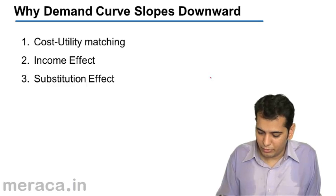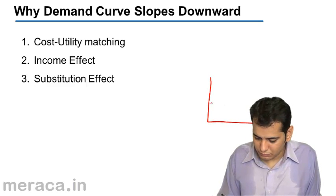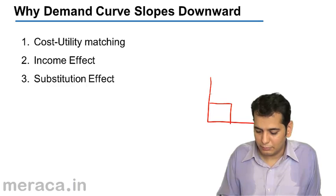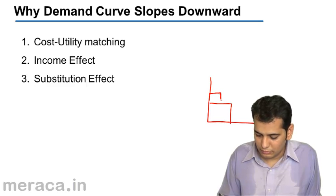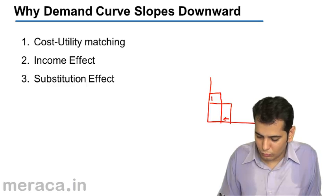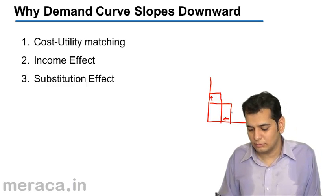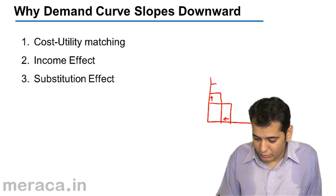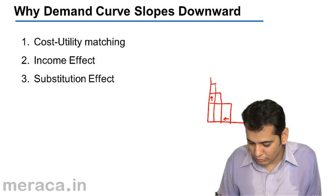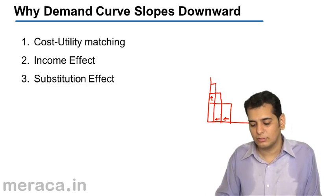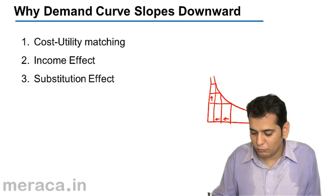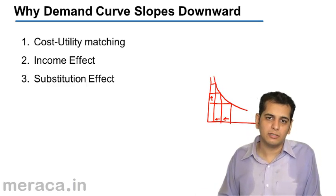Because of this reason, when the price of Pepsi goes up, the consumption of Pepsi falls. When the price furthermore goes up, the consumption furthermore falls. This leads to a downward-sloping demand curve.